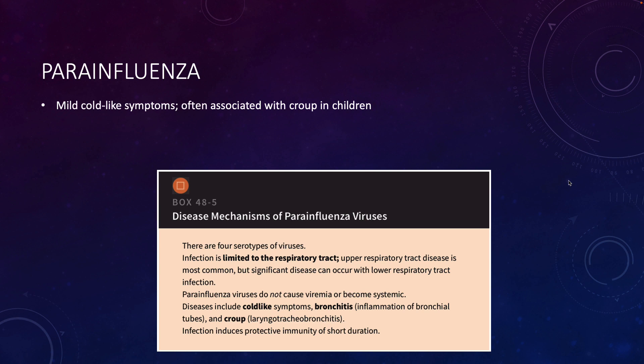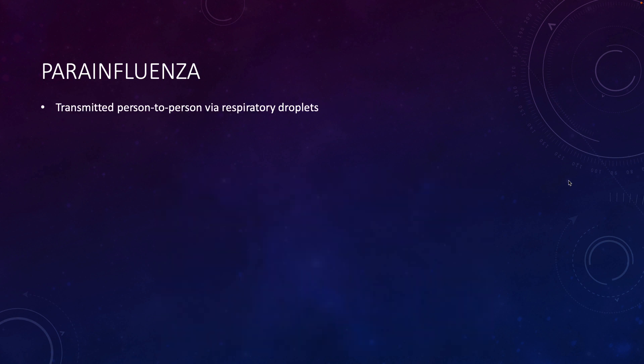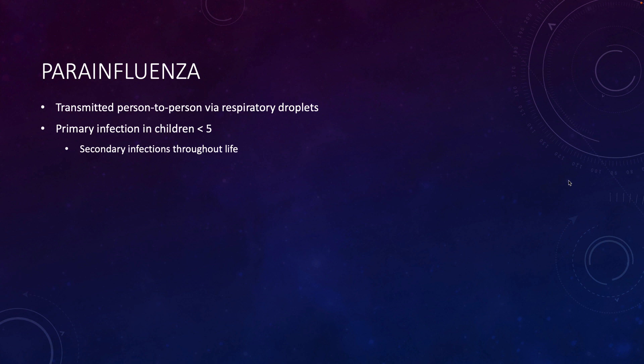Because there are other serotypes and the way the virus itself works, infection does induce protective immunity, but it's only short duration. We don't get lifelong protection from a single infection. It is transmitted person-to-person via respiratory droplets, and generally a patient will first be infected as a child under the age of five. Because of that lack of lifelong immunity, patients can be infected throughout their lives.